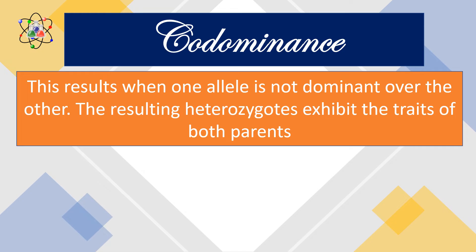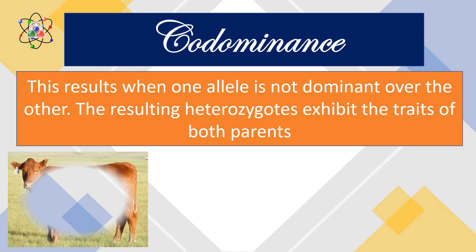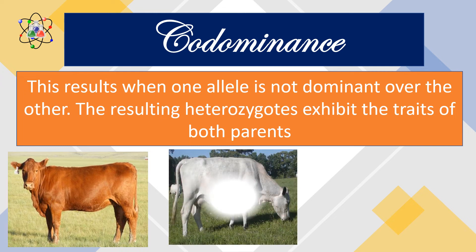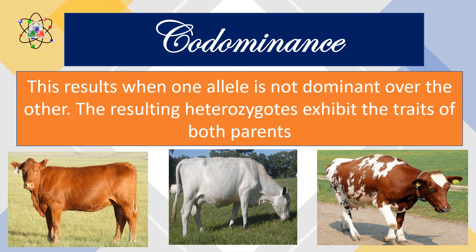A good example of co-dominance is when a red-haired cattle was crossed to a white-haired cattle, resulting in a roan cattle — the cattle with red and white hairs together. As you can see, the phenotypes of both parents are expressed in the offspring. How does it happen?